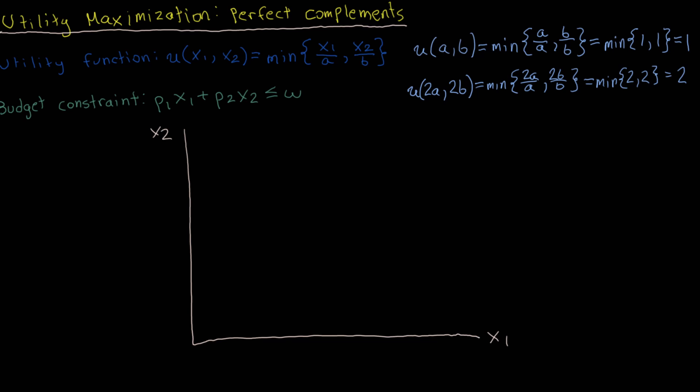Why is that important? If we look at the budget constraint, we see that we'll actually be spending all of our income when trying to maximize utility, because we can keep increasing the quantity of both goods to continue increasing utility until we've spent all of our income. That tells us that the solution must be such that all income is spent, and so the budget constraint holds with equality.